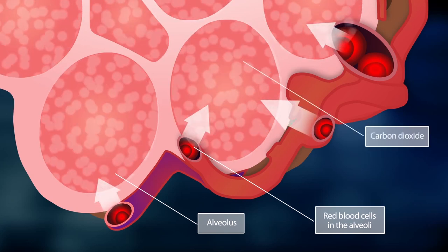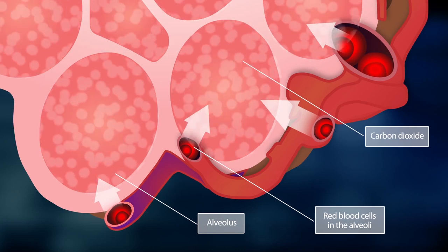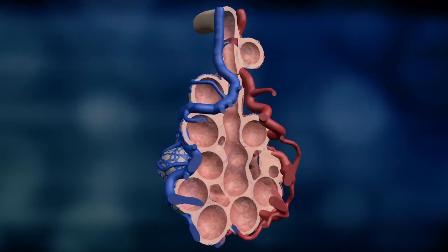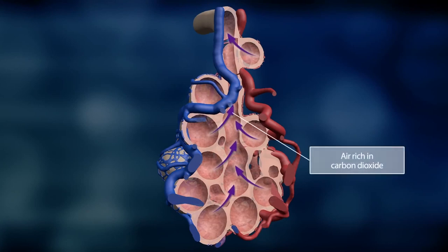In return, carbon dioxide from the red blood cells passes into the alveoli. The carbon dioxide enriched air now streams out of the alveoli and bronchial tubes toward the mouth and nose. This is called exhalation.